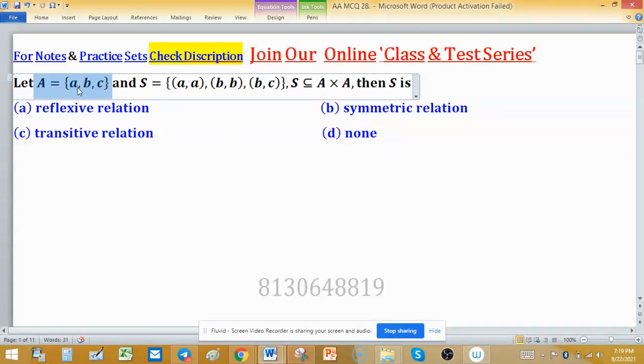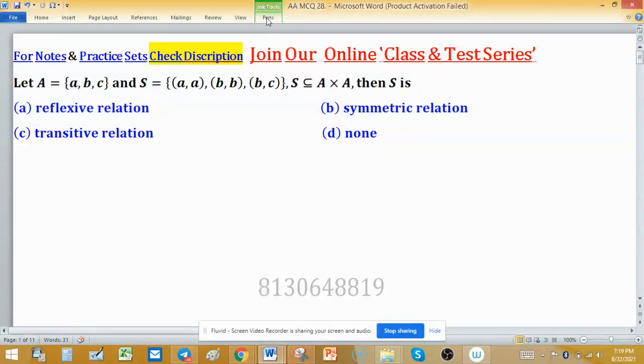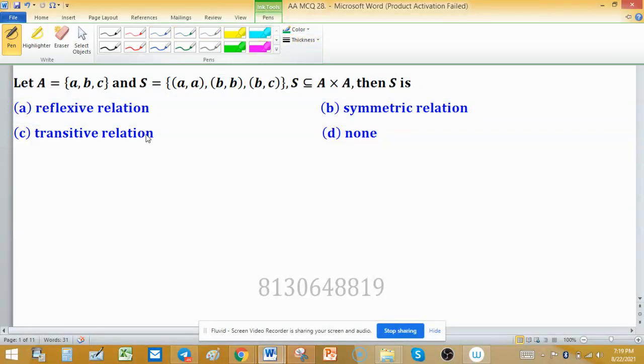Set A equals {a, b, c} containing three elements a, b, c, and set S contains ordered pairs (a,a), (b,b), and (b,c). Also, S is a subset of A cross A. Then S is: (a) reflexive relation, (b) symmetric relation, (c) transitive relation, or (d) none of these. We need to check each option one by one.